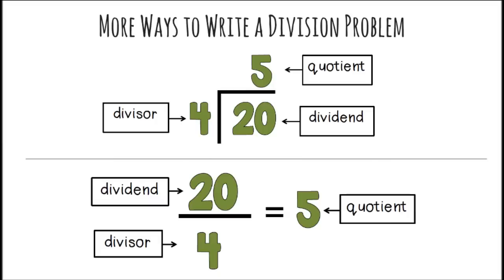Another way is 20 divided by 4, which is with a fraction bar. The 20 is above the fraction bar, which is the dividend. And 4 is below the fraction bar, which is the divisor. And to your right is 5, which is your quotient.